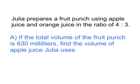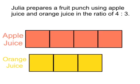First part: if the total volume of the fruit punch is 630 milliliters, find the volume of apple juice that Julia uses. I've drawn us a little diagram here to help us see what exactly is going on. We know Julia prepares a fruit punch using apple juice and orange juice in the ratio of 4 to 3, so for every 4 parts of apple juice she adds, she adds 3 parts of orange juice.